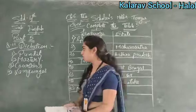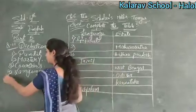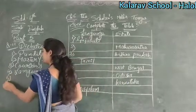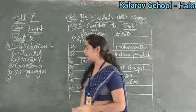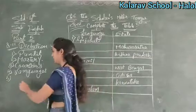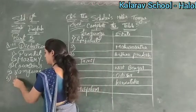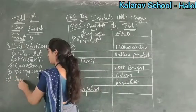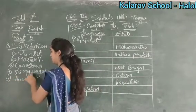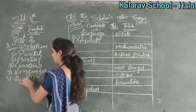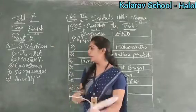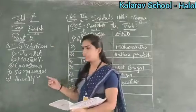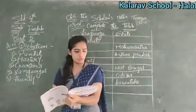Now see what is the fifth number? It is given: Fluently. So the spelling of fluently is F-L-U-N-T-E-R-Y. Like this you will write the words in the dictation.